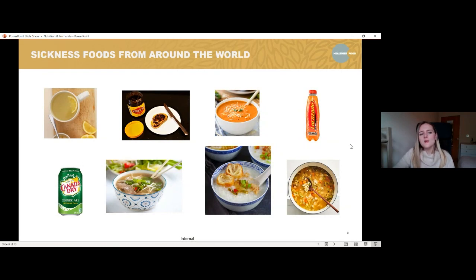So next slide, I thought it would just be fun to just include a few examples of some popular foods to eat when we're ill from around the world. So we've got some lemon and honey drink on here, Vegemite or Marmite on toast, tomato soup, Lucozade, ginger ale. We've got pho, so like a Vietnamese soup, like broth with meat and vegetables and herbs. We've got congee, kind of like a rice porridge, which is really popular in China. And then we've got chicken noodle soup, which is very popular over in the US.